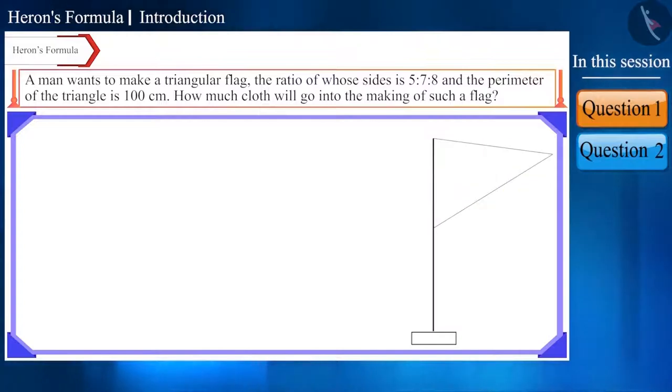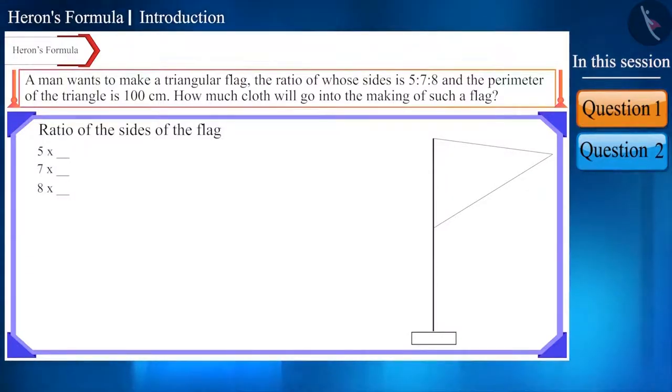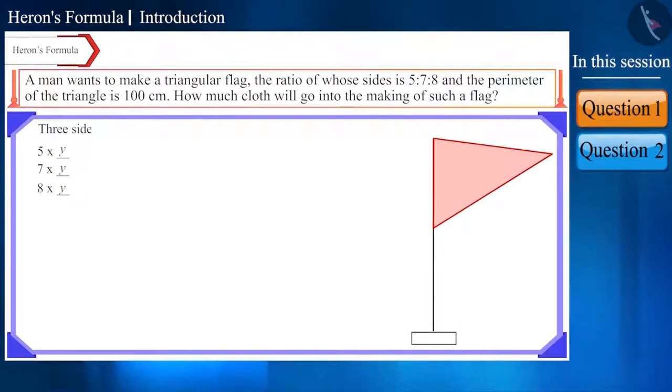In the question, we are given the ratio of the sides of the flag is 5 is to 7 is to 8. In these three sides, one factor will be common, on multiplying with which, we will get the measure of the sides of the flag. Agreed that the common factor is y. Then,